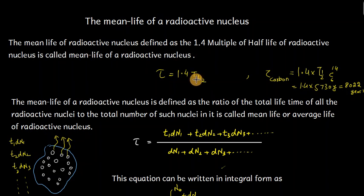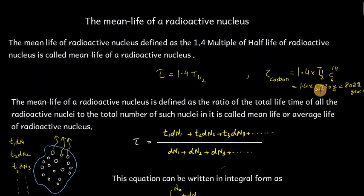As an example, let us consider Carbon-14. The half life of Carbon-14 is 5730 years. If we multiply 5730 years by 1.4, we obtain 8022 years. So this is known as the mean life or average life of Carbon-14.